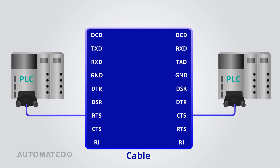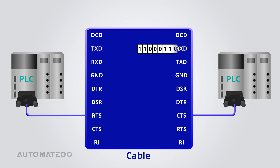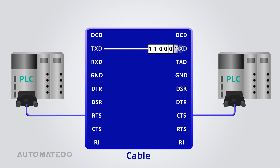Now let's dive into the working principle of the RS-232 protocol in data exchange. Imagine two devices needing to communicate with each other — one device transmits while the other exclusively receives. In reality, both devices engage in sending and receiving, but understanding one-way communication aids in comprehending both directions. The transmitter generates data to be sent to the receiver via a physical connection, typically a wire. The transmit pin is known as TxD on the transmitter's end and RxD on the receiver's end. Connecting these pins allows for data transmission.